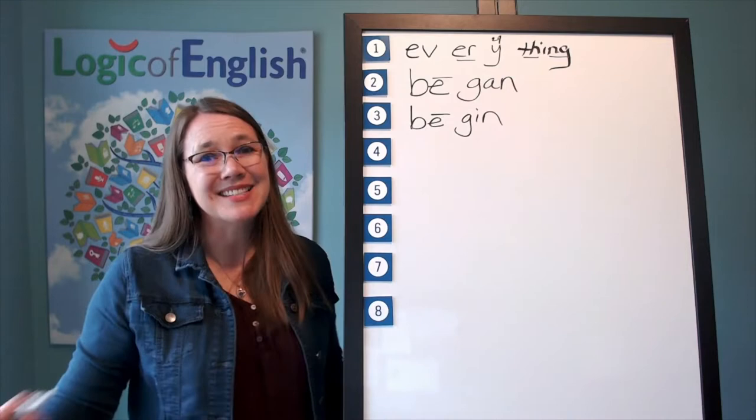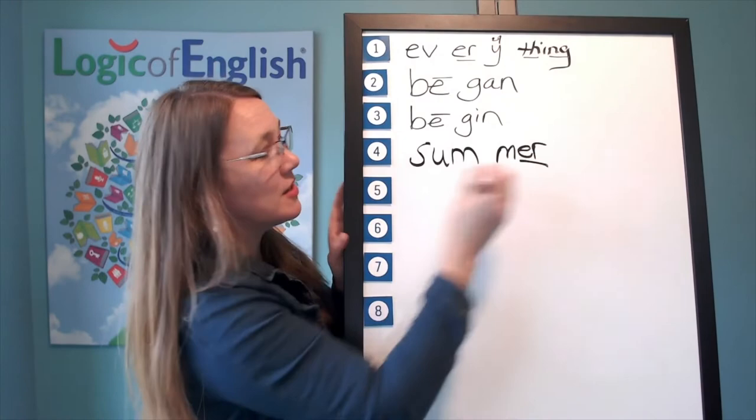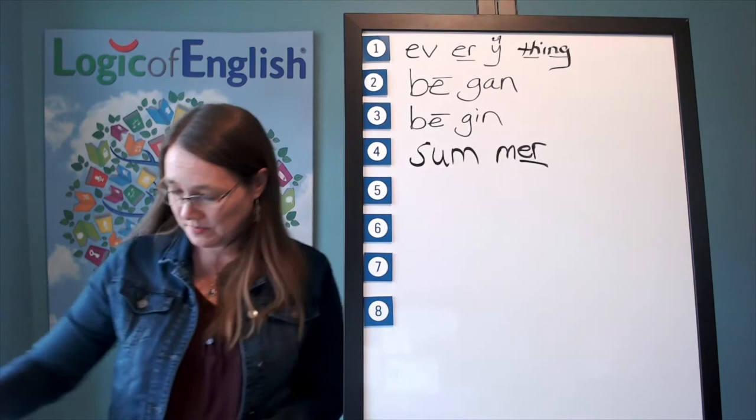Excellent. Now help me to write it. The first syllable is sum, S-uh-m. The second syllable is mer, M-er. And how will we mark it? We'll underline the er. Let's read it. S-uh-m-er. Summer. Excellent.